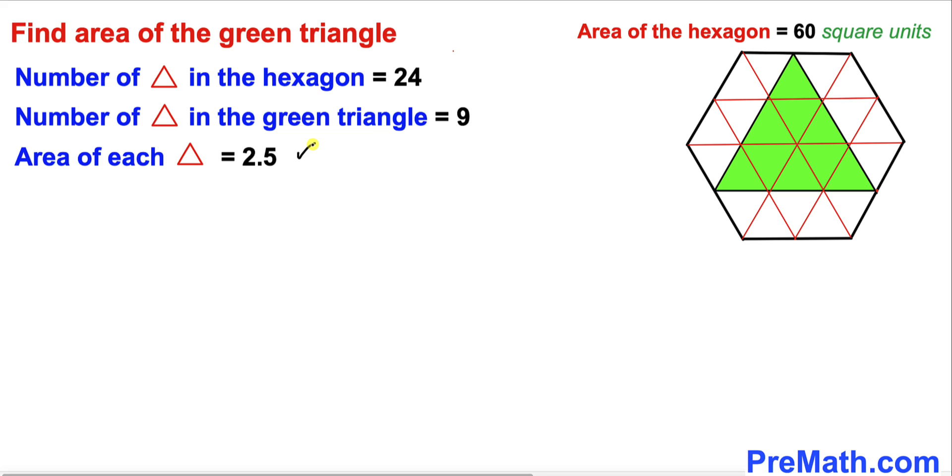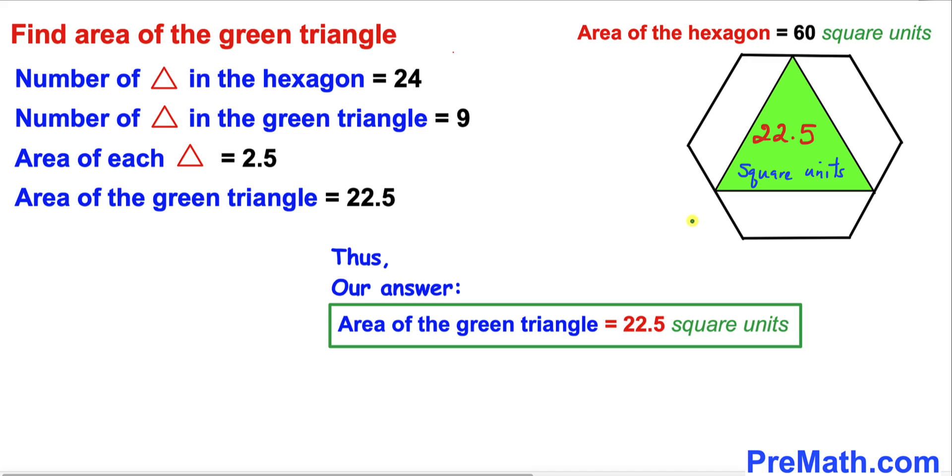We know there are nine of these tiny triangles, so therefore the area of this green triangle is going to be 9 times 2.5. If we multiply them, it turns out to be 22.5. Thus, the area of this green triangle turns out to be 22.5 square units.